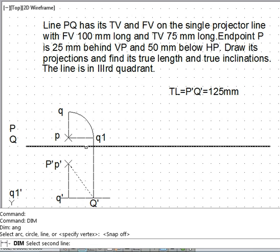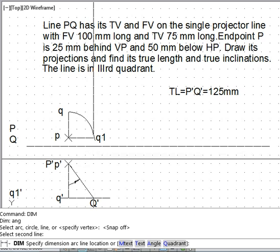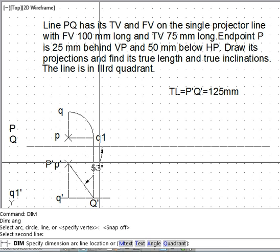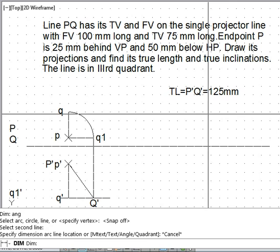We select the lines where we want to measure the angle. So this angle represents the angle of the line with horizontal plane, so it is 53.